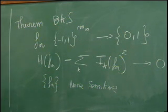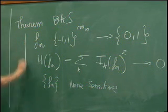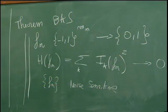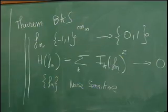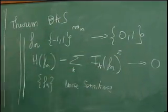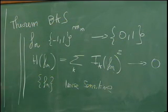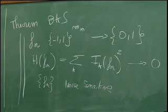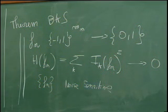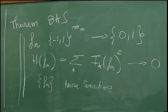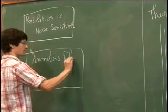I will recall what it means exactly in our case today, the case of percolation. The purpose today is to use this theorem and to study the influences of the percolation crossings to deduce that the sequence of crossing events is indeed noise sensitive. The second part of the lecture will be to apply techniques of Fourier analysis and KKL theorems in another context: anomalous fluctuations in first passage percolation.